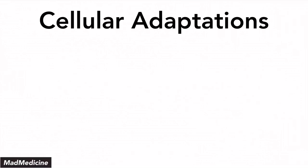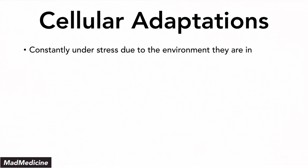Let's discuss metaplasia by first talking about cellular adaptations. Essentially, our cells are constantly under a lot of stress because of the environment they are in. One example of this is the stomach lining, which is constantly being eroded because of our stomach acid — a very stressful environment. At a cellular level, we develop adaptations to handle that stress.